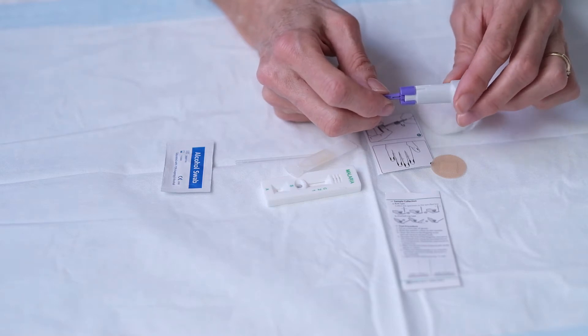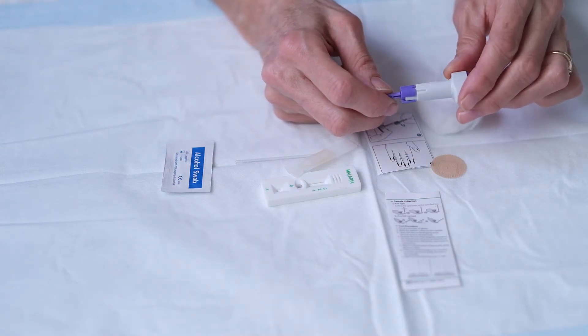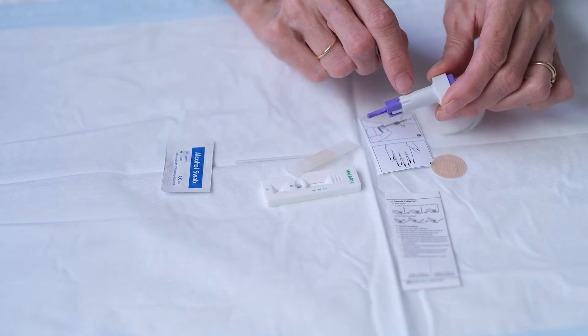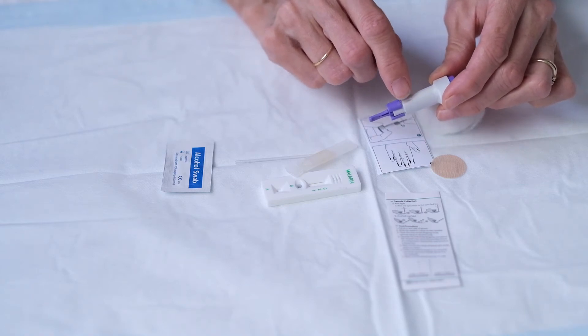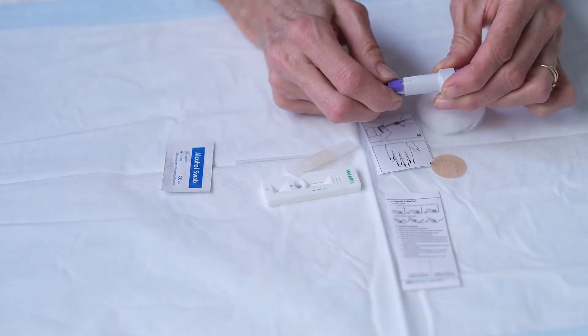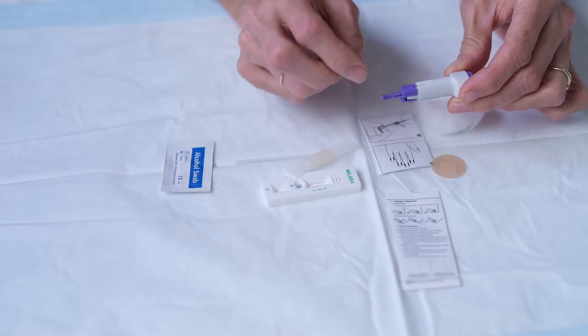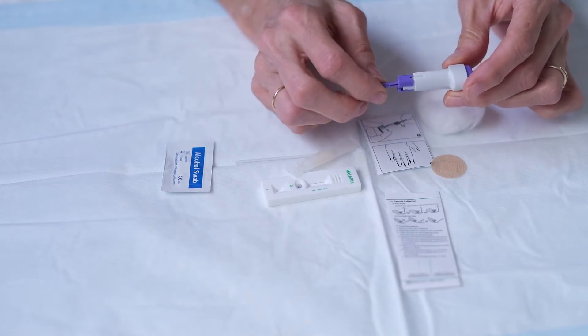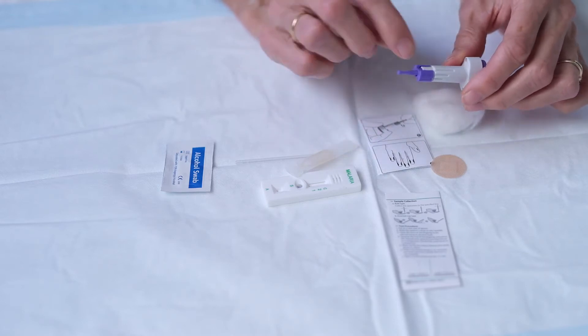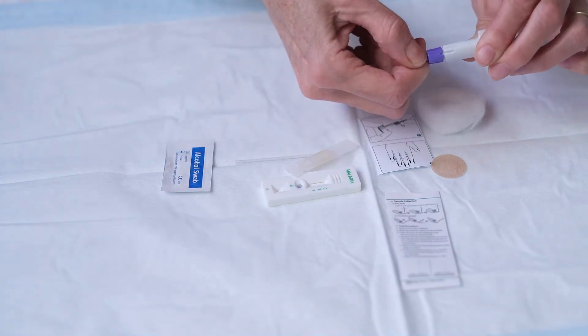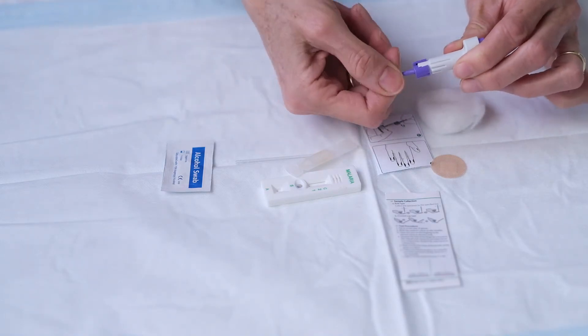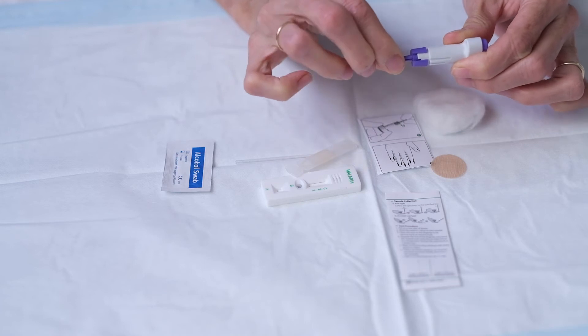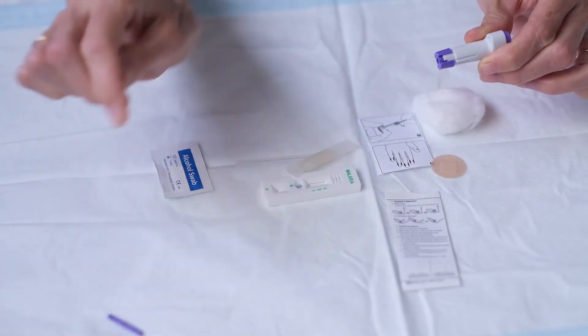Now this lancet has a little dial on it and you can see there's three sort of like a large, medium and small, and you want to turn that to the small because we don't need it to be very deep. The lancet inside is actually protected by this little cap so we're going to take the little purple device off and throw that away.